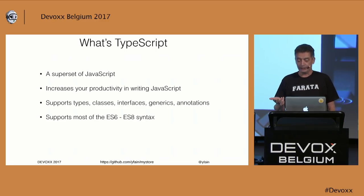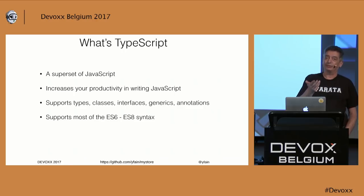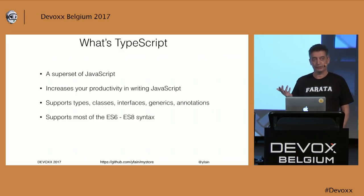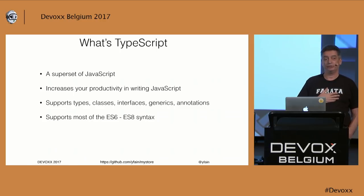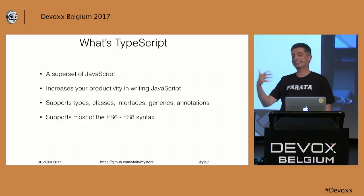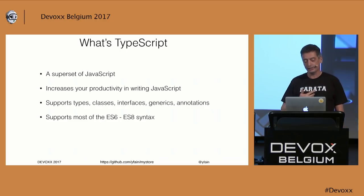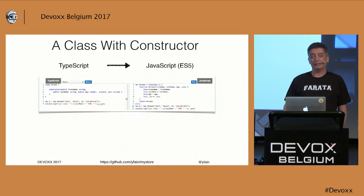TypeScript supports typings — you can declare a variable and specify its type. Java developers are used to this but JavaScript doesn't do this. In TypeScript you can declare variables with types, but it's optional. If you don't want to, don't declare. They don't force you, but it is suggested and recommended. It supports types, classes, interfaces, generics, annotations — all the things you know from Java. For Java developers, TypeScript is a very easy language to learn.